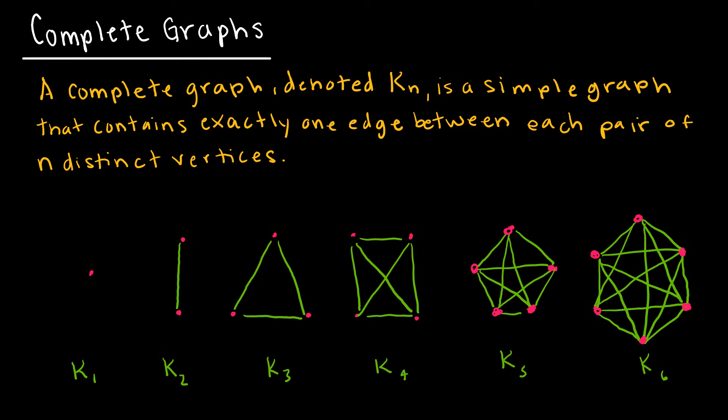A complete graph is one of the special kinds of graphs, with notation K sub n. It is a simple graph that contains exactly one edge between each pair of n distinct vertices. Remember, a simple graph doesn't have any double edges and doesn't have any loops.